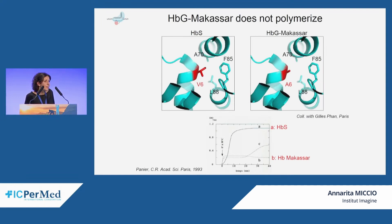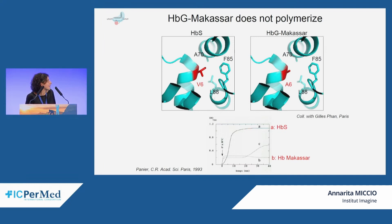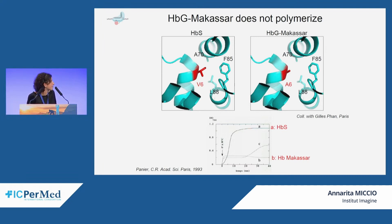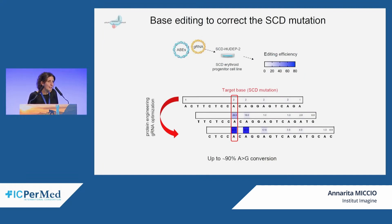Hemoglobin polymerization occurs because valine at position six of the beta-sickle globin interacts with a hydrophobic pocket present on an adjacent hemoglobin tetramer. We predicted that the alanine in position six of hemoglobin Makassar is not bulky enough to fit in this pocket. It was shown in the 1990s in the lab of Claude Poyart and Stuart Edelson here in Paris that hemoglobin Makassar indeed cannot polymerize. Generating the Makassar mutation required significant protein engineering and optimization, but we were able to achieve around 90% base conversion in an erythroid cell line harboring the sickle cell disease mutation.